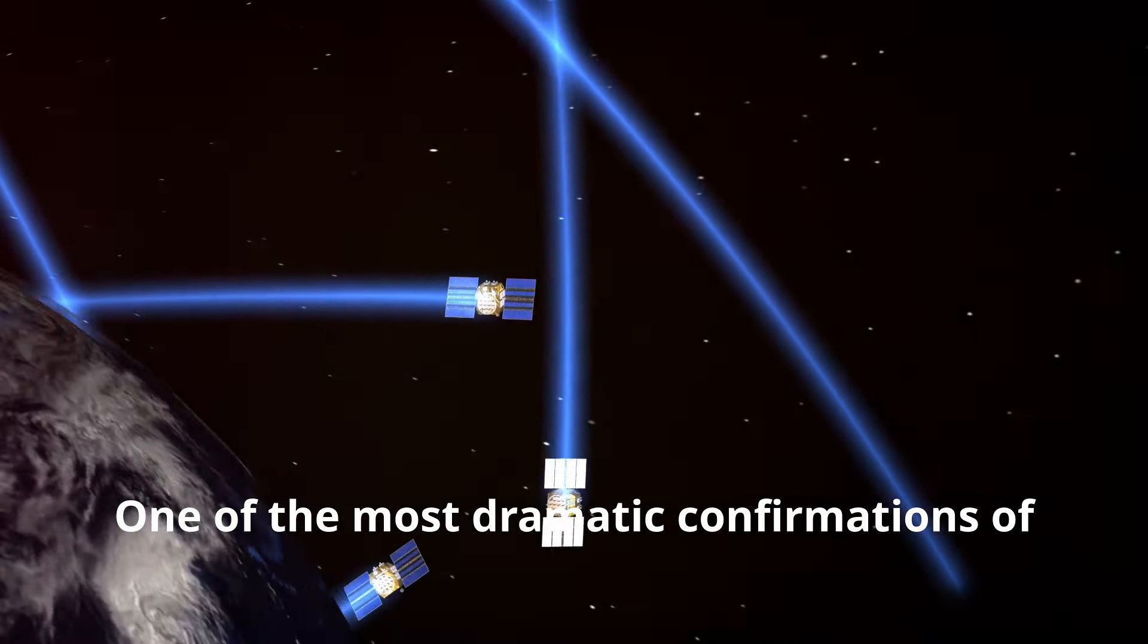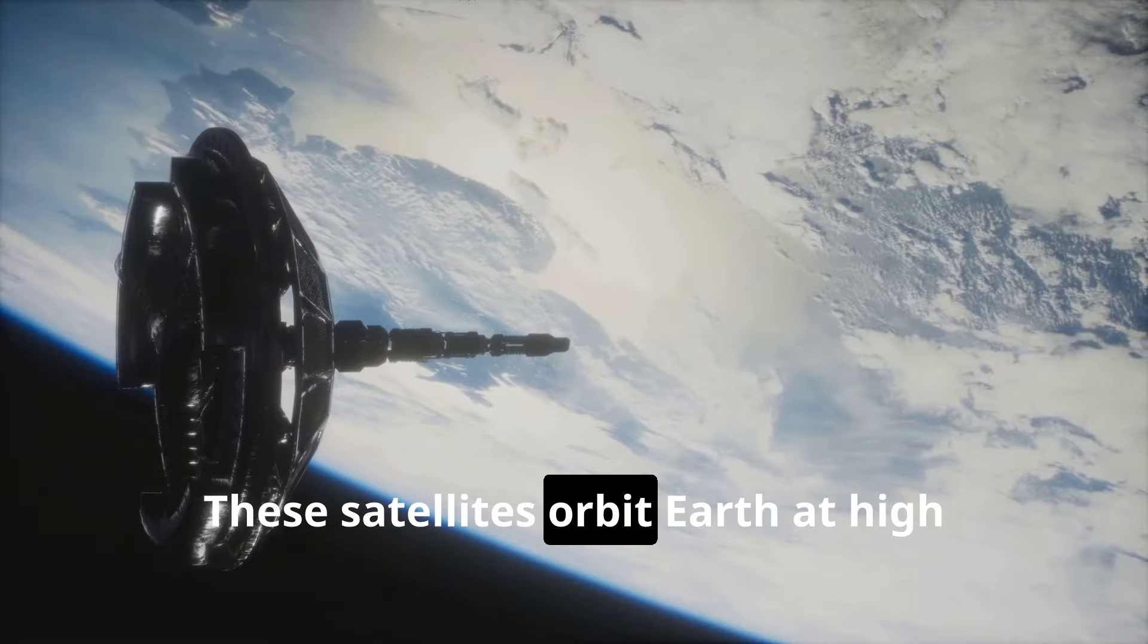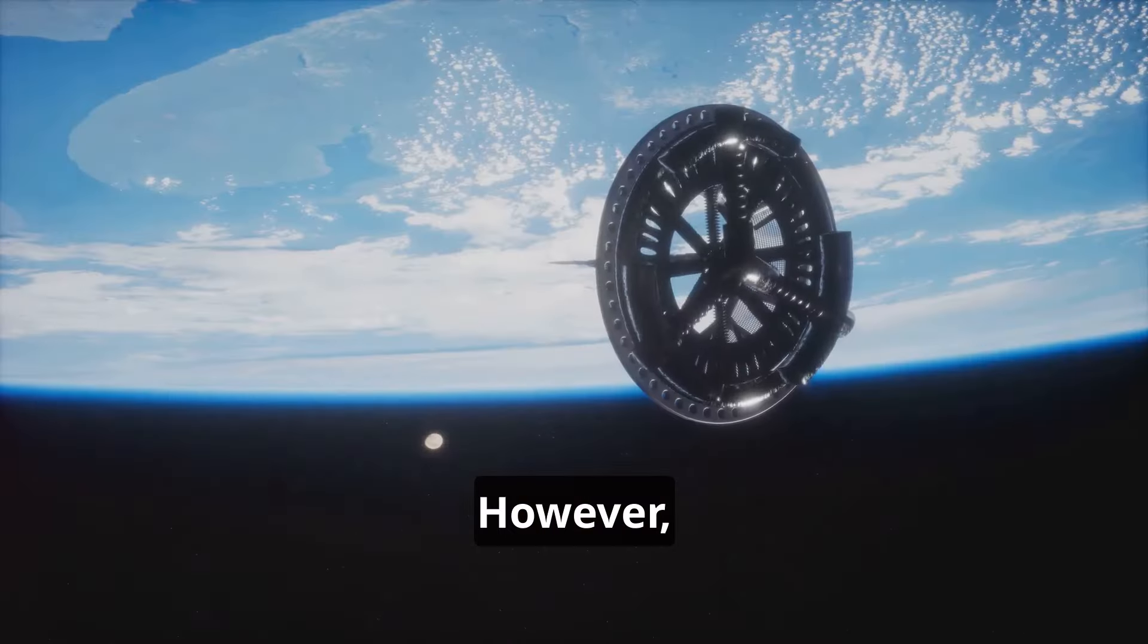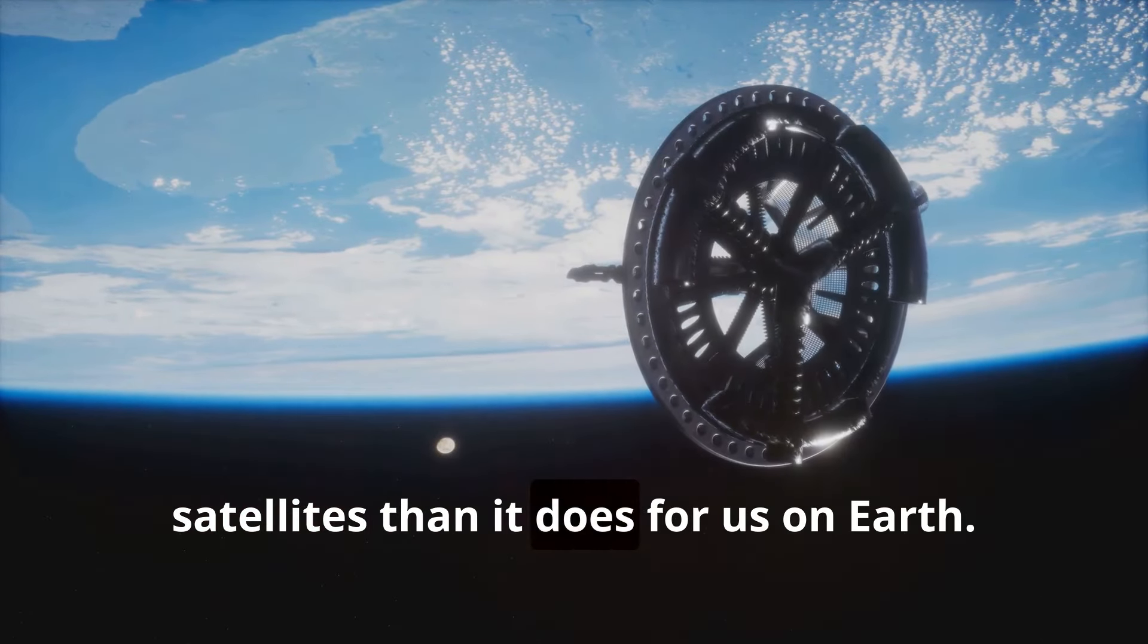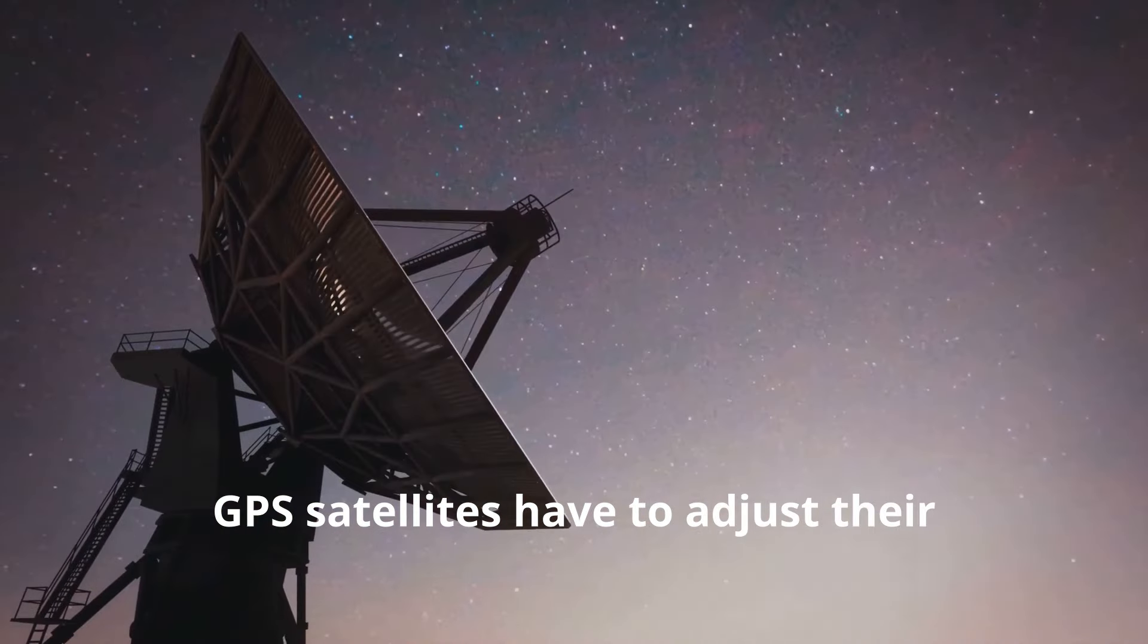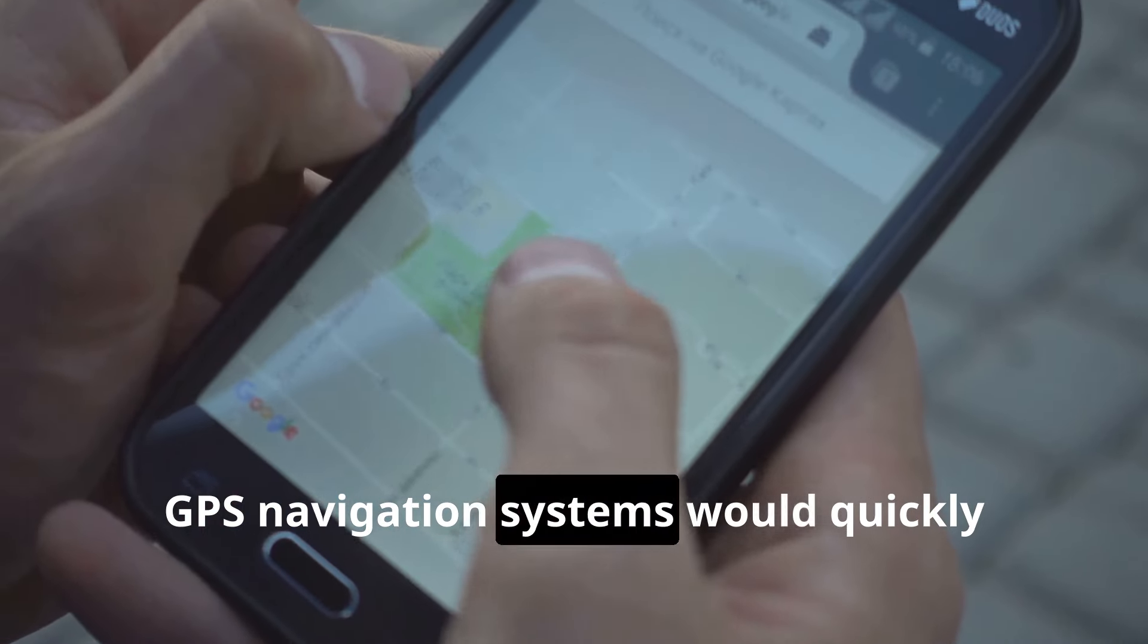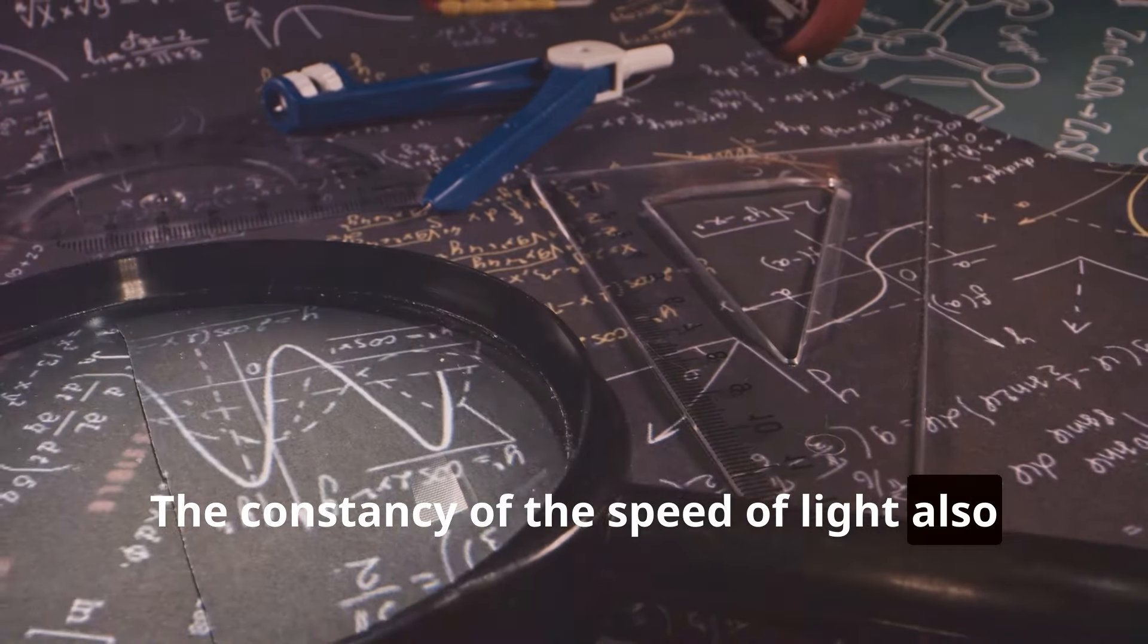One of the most dramatic confirmations of time dilation comes from GPS satellites. These satellites orbit Earth at high speeds and rely on precise timekeeping to provide accurate location information. However, due to their speed, time passes slightly slower for the satellites than it does for us on Earth. To compensate for this time difference, GPS satellites have to adjust their clocks by a tiny amount each day. Without this relativistic correction, GPS navigation systems would quickly become inaccurate.